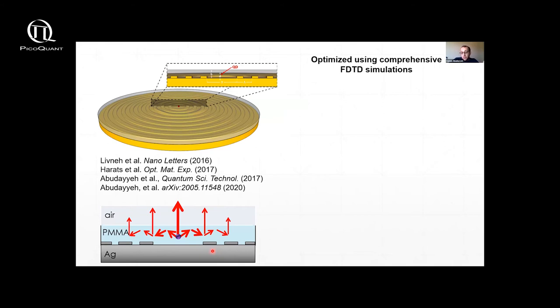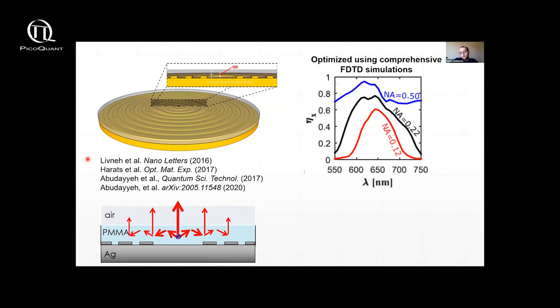And one essential feature of this antenna is it's very broadband, as I mentioned before. So to show this, what I'm showing you here are simulations of the collection efficiency as a function of wavelength for a structure that's optimized at 650 nanometers.